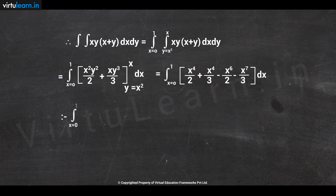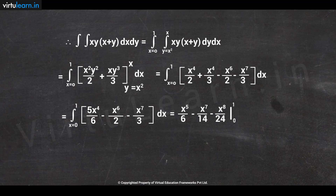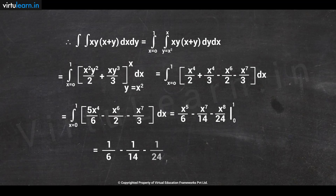This simplifies to ∫₀¹ (5x⁴/6 − x⁶/2 − x⁷/3) dx. On integration we get [x⁵/6 − x⁷/14 − x⁸/24] evaluated at 0 and 1. Substituting the upper limit gives 1/6 − 1/14 − 1/24, and the lower limit gives 0. Simplification gives 3/56 as the value of the integral.